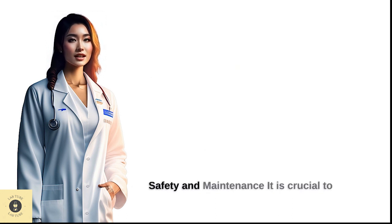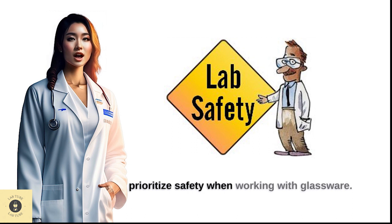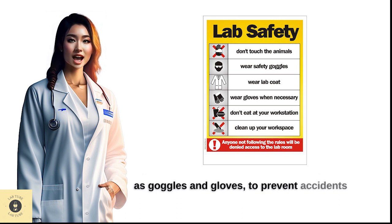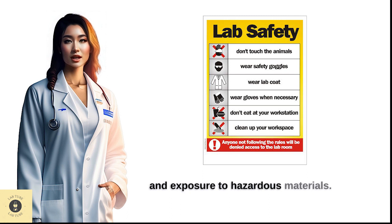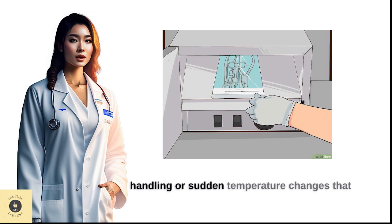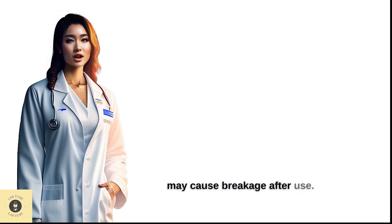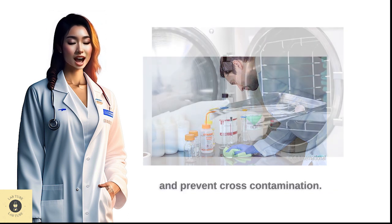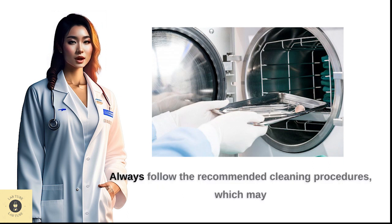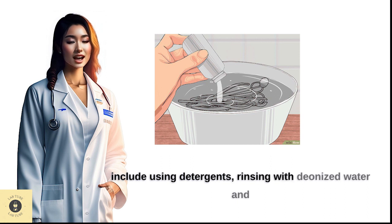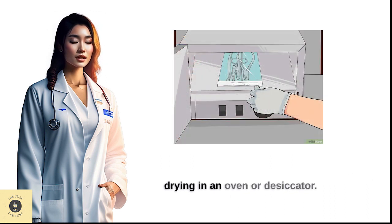It is crucial to prioritize safety when working with glassware. Always wear appropriate personal protective equipment (PPE), such as goggles and gloves, to prevent accidents and exposure to hazardous materials. Handle glassware with care, avoiding rough handling or sudden temperature changes that may cause breakage. After use, proper cleaning and sterilization are essential to maintain glassware integrity and prevent cross-contamination. Always follow the recommended cleaning procedures, which may include using detergents, rinsing with deionized water, and drying in an oven or desiccator.